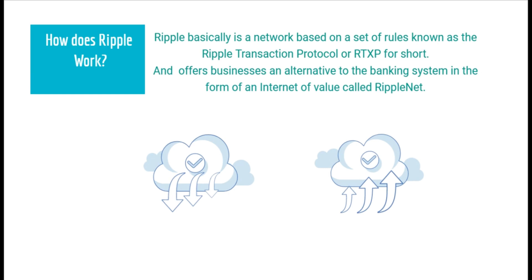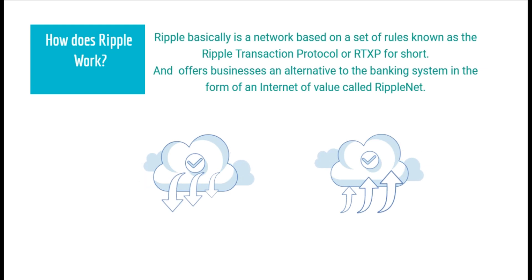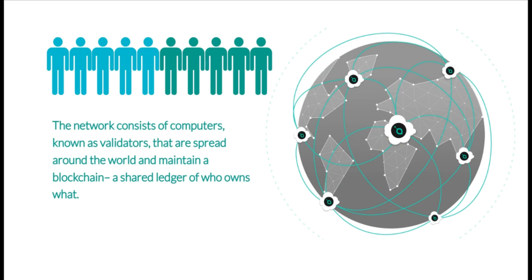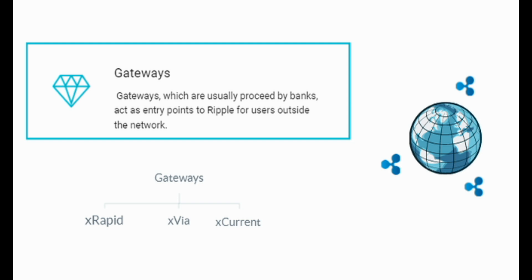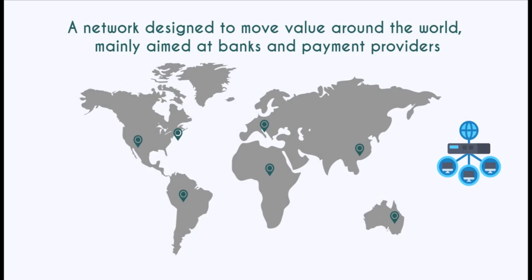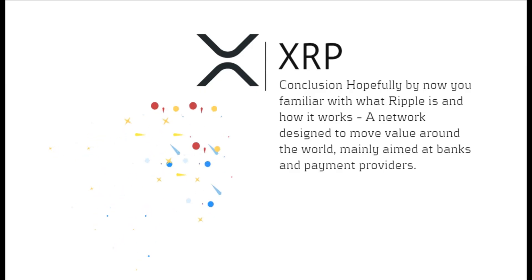How does Ripple work? Ripple is a network based on a set of rules known as the Ripple Transaction Protocol, or RTXP, and offers businesses an alternative to the banking system in the form of an internet of value called RippleNet. The network consists of computers known as validators spread around the world that maintain a blockchain — a shared ledger of who owns what. Anyone can run a validator and help maintain the Ripple network, just as anyone can run a Bitcoin node. Companies wanting access to the Ripple network can use gateways, which act as entry points to Ripple for users outside the network — similar to going to a bank to access the banking system. Ripple products like xRapid, xVia, and xCurrent are offered to companies to optimize their money transfer solutions.